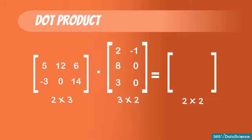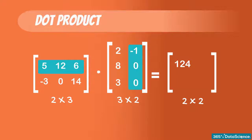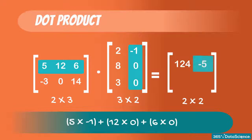Let's find the dot product of 5, 12, 6, and 2, 8, 3. It is 5 times 2, plus 12 times 8, plus 6 times 3, which equals 124. Easy! 124 is also the first element of the output matrix. Next, we find the dot product of 5, 12, 6, with the second vector, minus 1, 0, 0. It is 5 times minus 1, plus 12 times 0, plus 6 times 0. The result is minus 5, which is the second element of the output matrix.